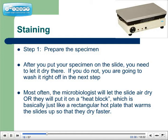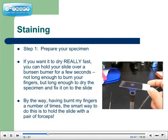Most often, the microbiologist will let the slide air dry, or they will put it on a heat block, which is basically just like a rectangular hot plate that warms up the slide so they dry faster. If you want it to dry really fast, you can hold your slide over a Bunsen burner for a few seconds — not long enough to burn your fingers, but long enough to dry the specimen and fix it on the slide. The smart way to do this is to hold the slide with a pair of forceps. If you can let it air dry, that's pretty much the best way to go.